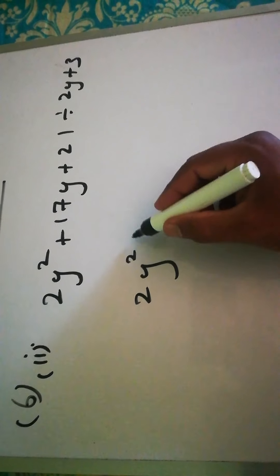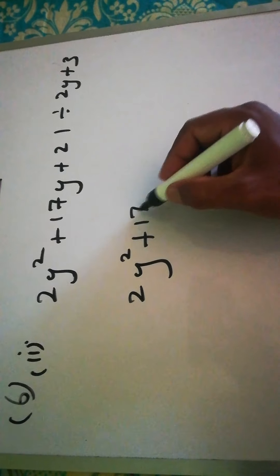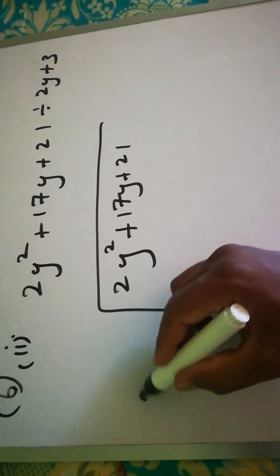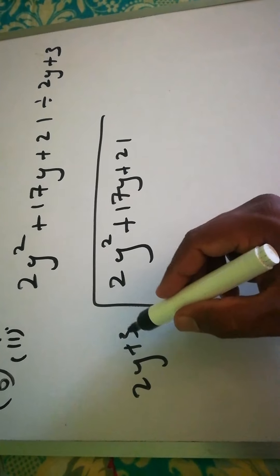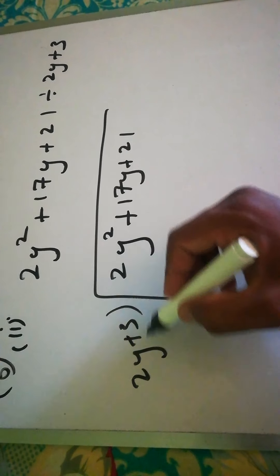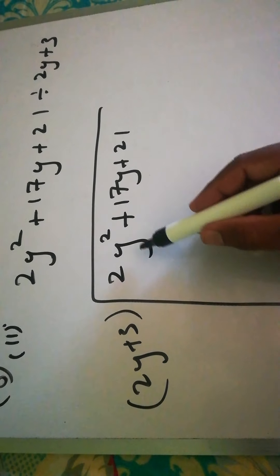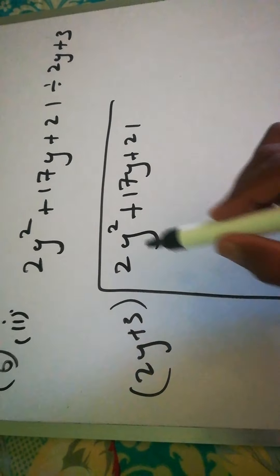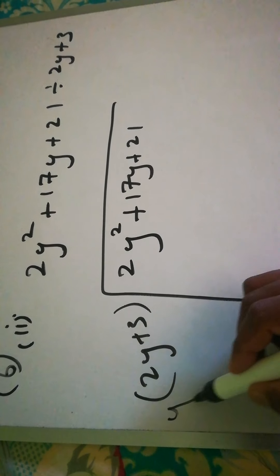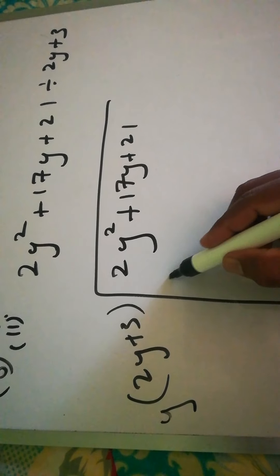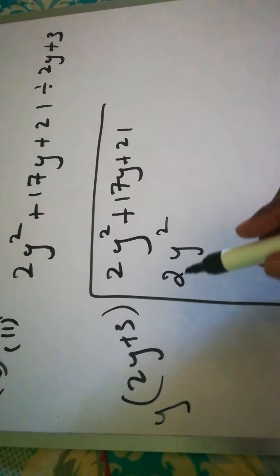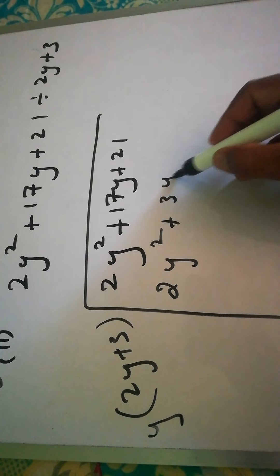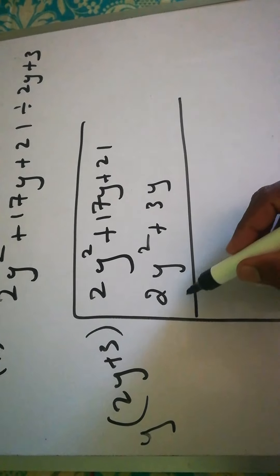Question number 2: divide 2y² + 17y + 21 by 2y + 3. To get 2y² here, we need to multiply y by 2y, which gives 2y². Then y into 3 is 3y. Change the sign.